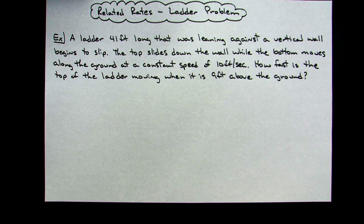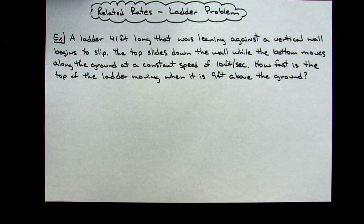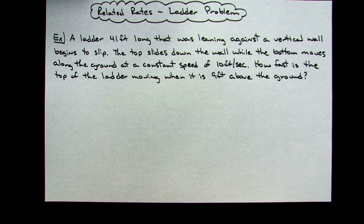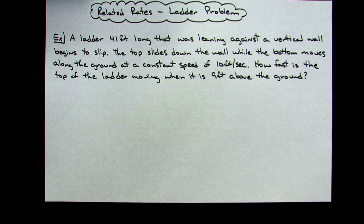Today we're going to take a look at a related rates problem commonly found in calculus — specifically the ladder-type problem. We've got a ladder 41 feet long leaning against a vertical wall that begins to slip. The top slides down the wall while the bottom moves along the ground at a constant speed of 10 feet per second. How fast is the top of the ladder moving when it is nine feet above the ground?